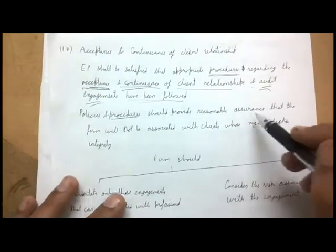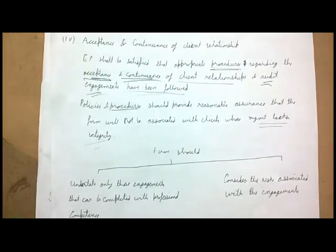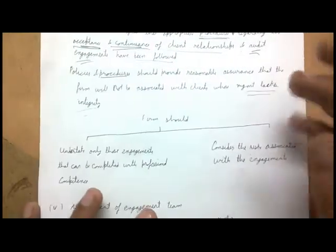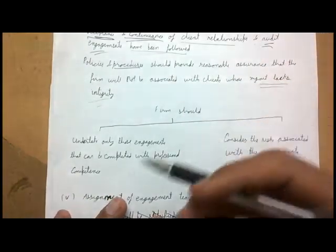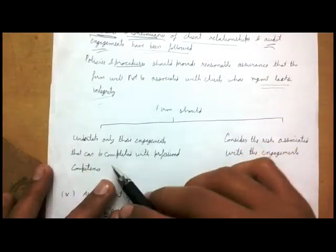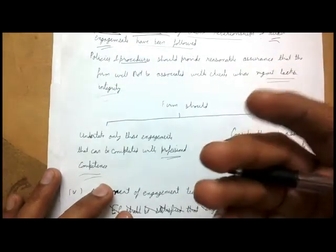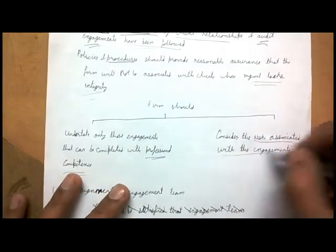The engagement partner must ensure that procedures regarding accepting new clients and continuing existing audit relationships have been followed. The policies and procedures should provide reasonable assurance that the firm will not be associated with clients whose management lacks integrity — where there are conflicts within the management. The firm should undertake only those engagements that can be completed with professional competence and appropriate consideration of associated risks.